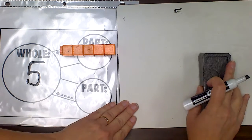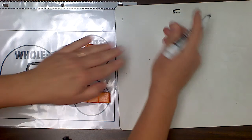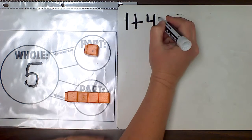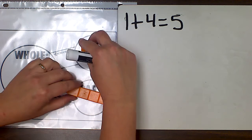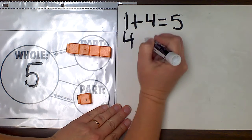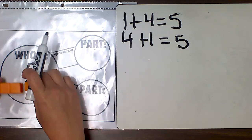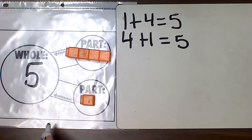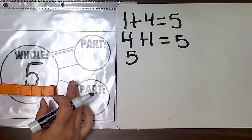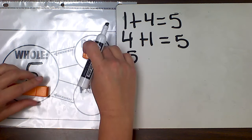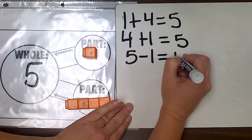Another way that we can make five is one and four. I always add my parts to make the whole number, so I could write one plus four equals five. I can also swap these and say four plus one equals five — my parts go together to make the whole number of five. If I want to show a subtraction sentence, I start with my whole number, which is five, and I could take one away. So if I take that one away, I'm left with the other part of four: five minus one equals four.